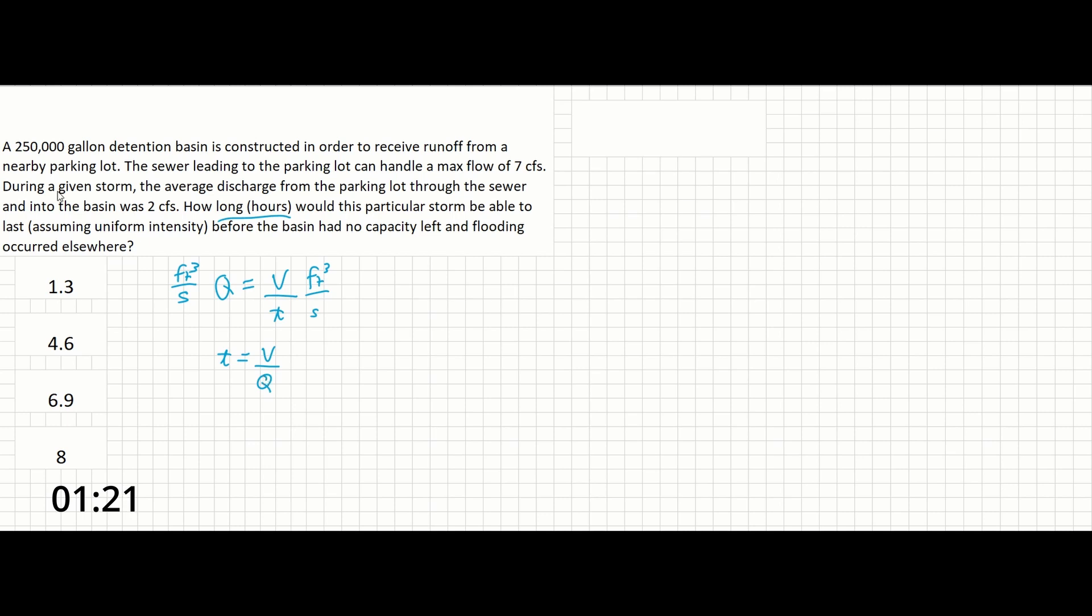We've already been given our V, that's the 250,000-gallon detention basin. And we also have been given our Q. It is going to be 2 cubic feet per second. Ignore the 7 cubic feet per second. That was given just to throw you off. This question is asking for how long this particular storm would have been able to last during the storm where the flow is 2 cubic feet per second. We don't care currently about what the max flow of the sewer could be.